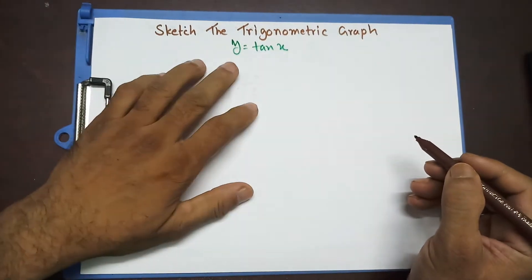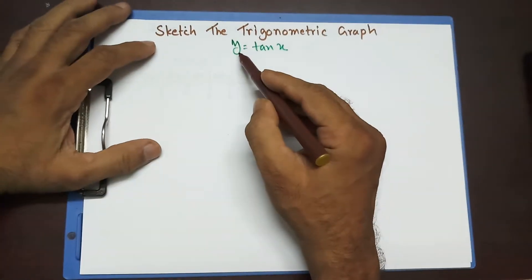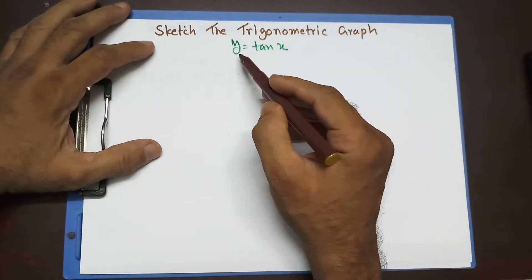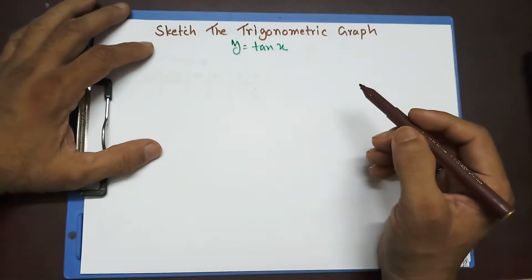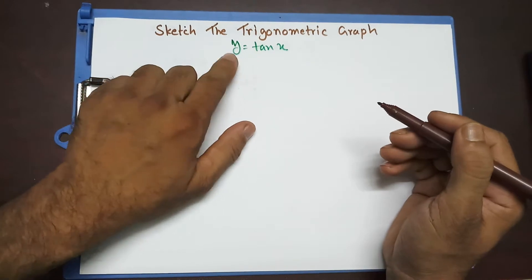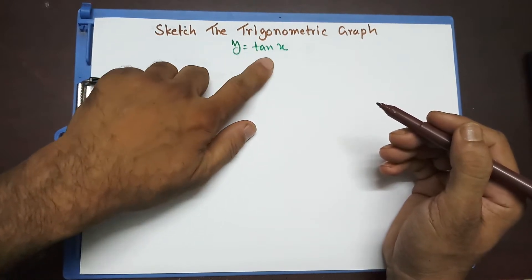In my last two videos, I have showed you how to sketch y equal to sin x and y equal to cos x. And today is time we are going to do y equal to tan x.